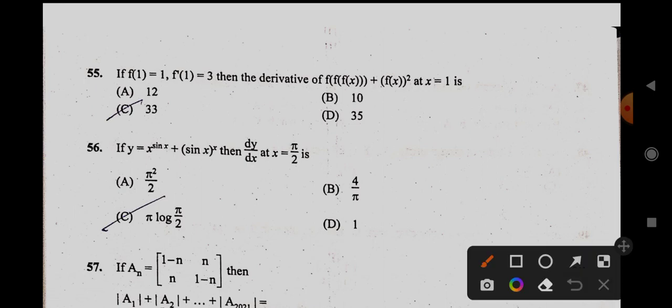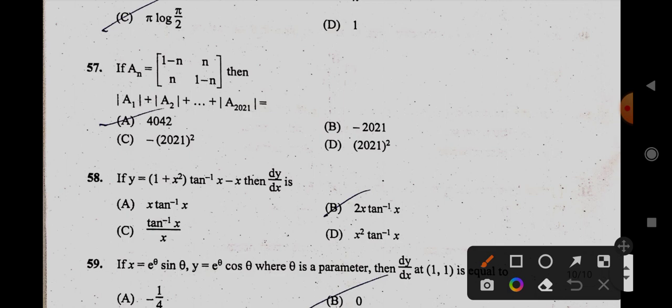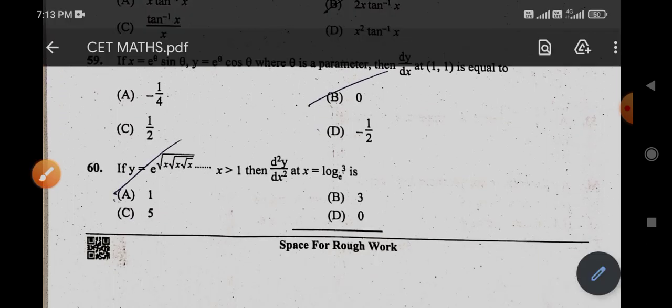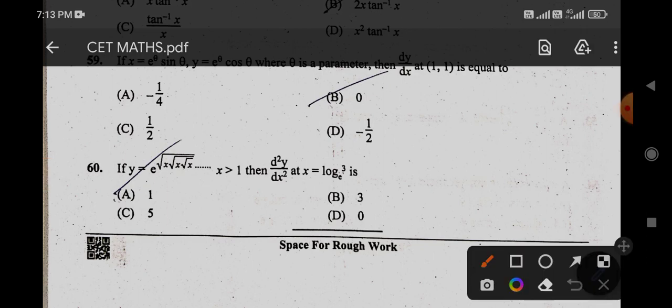55, it is C. 56, it is D. 57, it is 2021 square. 58, it is B. 59th option, it is, once again I say, it is B option.